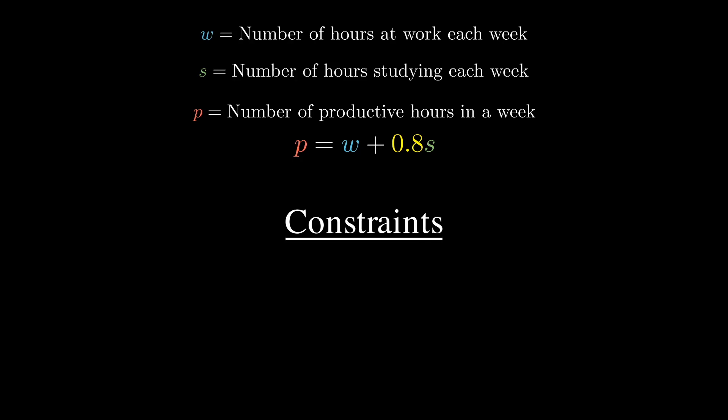Our assumptions are also subject to some constraints. There are only so many hours in a week. For our example, let's assume we're only focusing on weekdays, so we can take out the weekend hours. We're assuming eight hours of sleep every night. We'll also remove some personal time and other tasks. Our assumption here is that we have 60 hours to split between work and study. In other words, w plus s is less than or equal to 60.